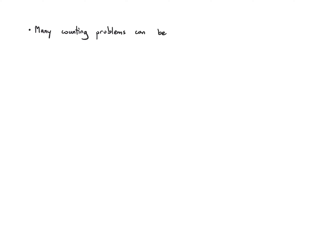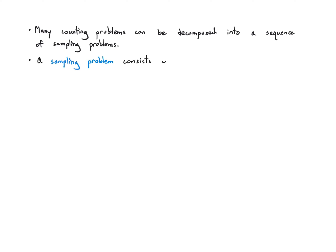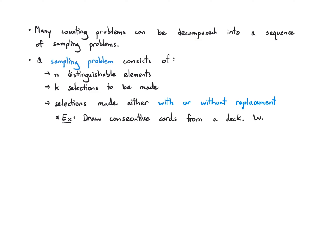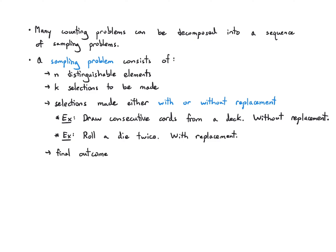Many of these counting problems can be decomposed into a sequence of sampling problems. A sampling problem consists of n distinguishable elements — n things you can tell apart — and k selections that you have to make. These selections can be made either with or without replacement. For example, drawing consecutive cards without putting them back is without replacement, and rolling a die twice is with replacement because you're not removing any faces between rolls.